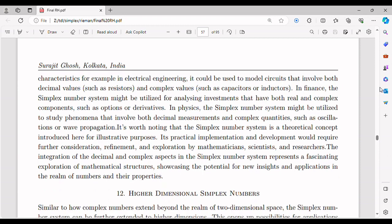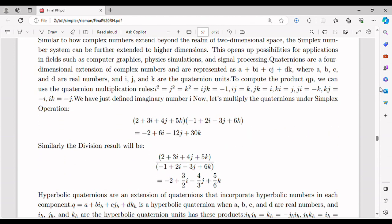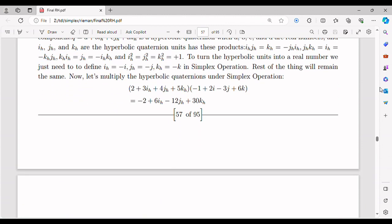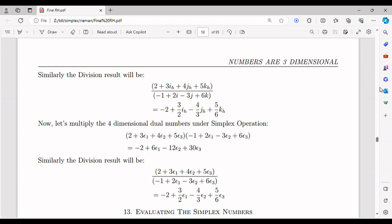Third, it hampers scientific progress by discouraging interdisciplinary collaboration. Many groundbreaking discoveries have occurred at the intersection of different fields, where novel ideas from one domain may not be initially understood or appreciated by another. Neglecting or dismissing these interdisciplinary endeavors can impede holistic understanding and limit the potential for groundbreaking discoveries.